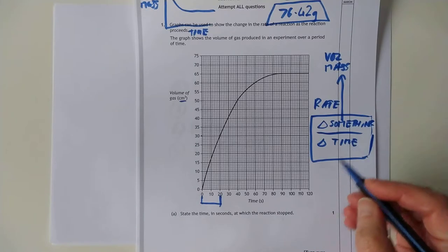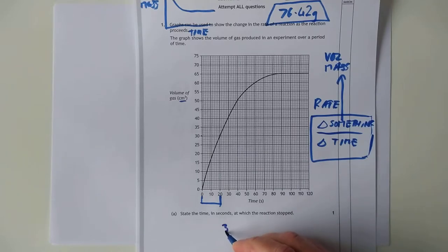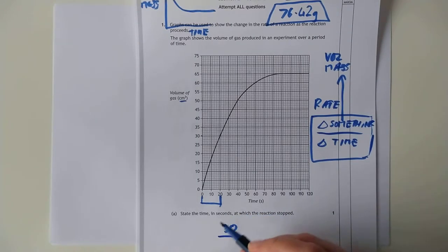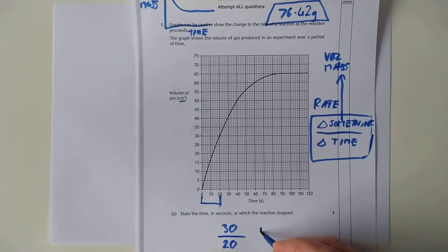So in our case, our change in volume changes from nothing to 30. So that's 30 on the top line. And the bottom line is the change in time. That's nothing to 20. So 30 over 20 is 1.5. 1.5 what? This is the very rare case where you can't leave it as just a number.